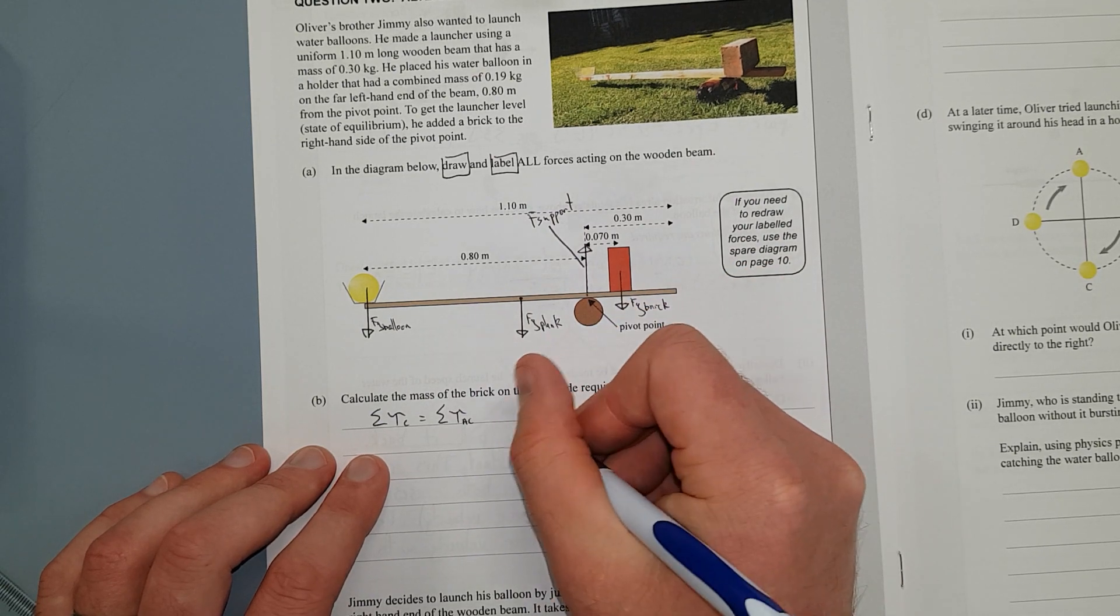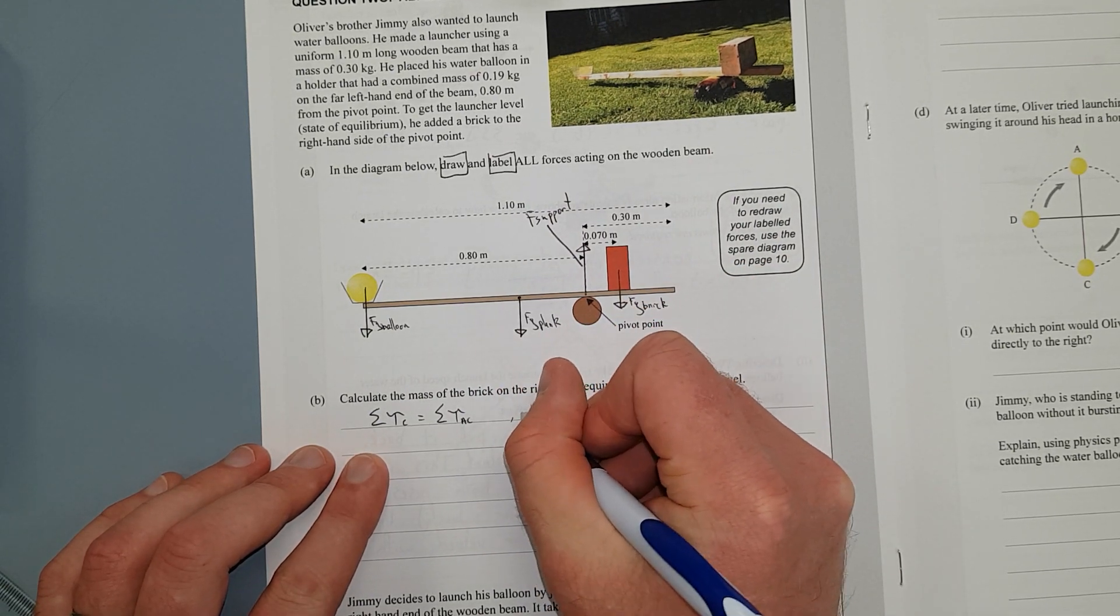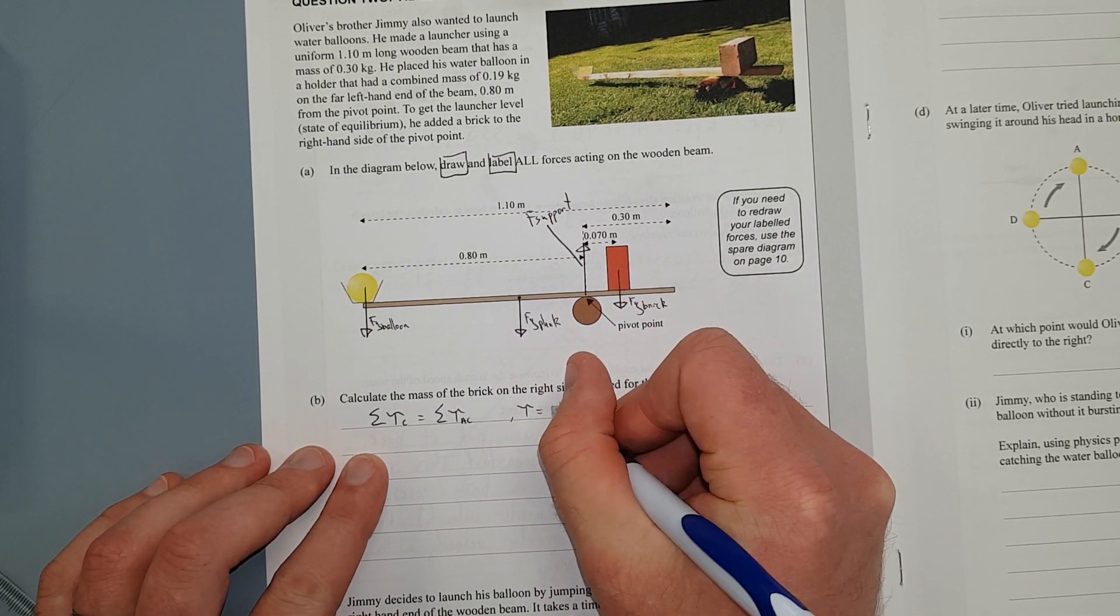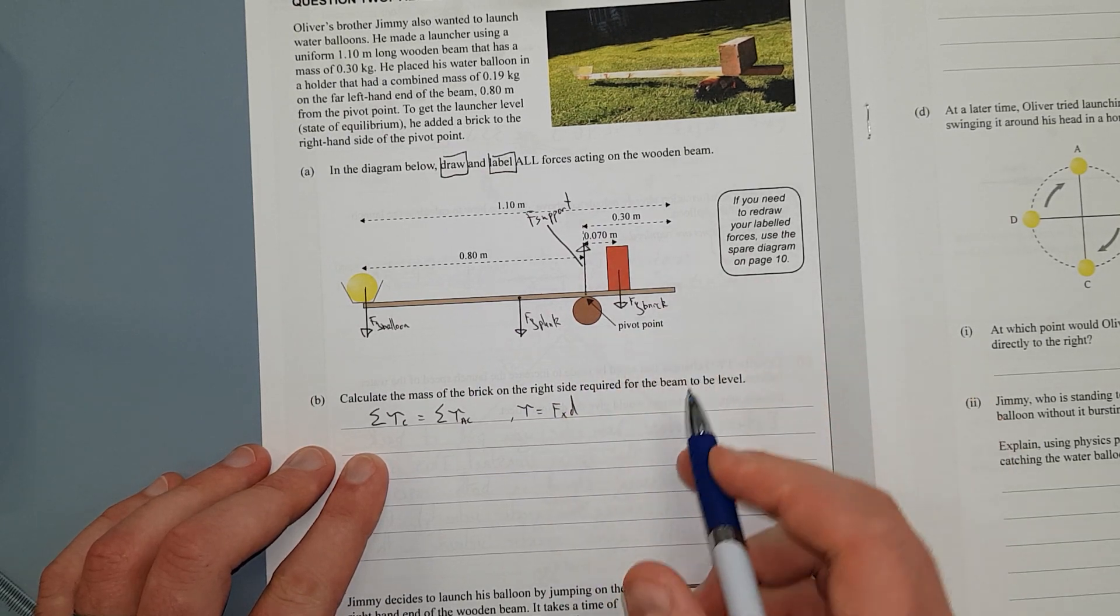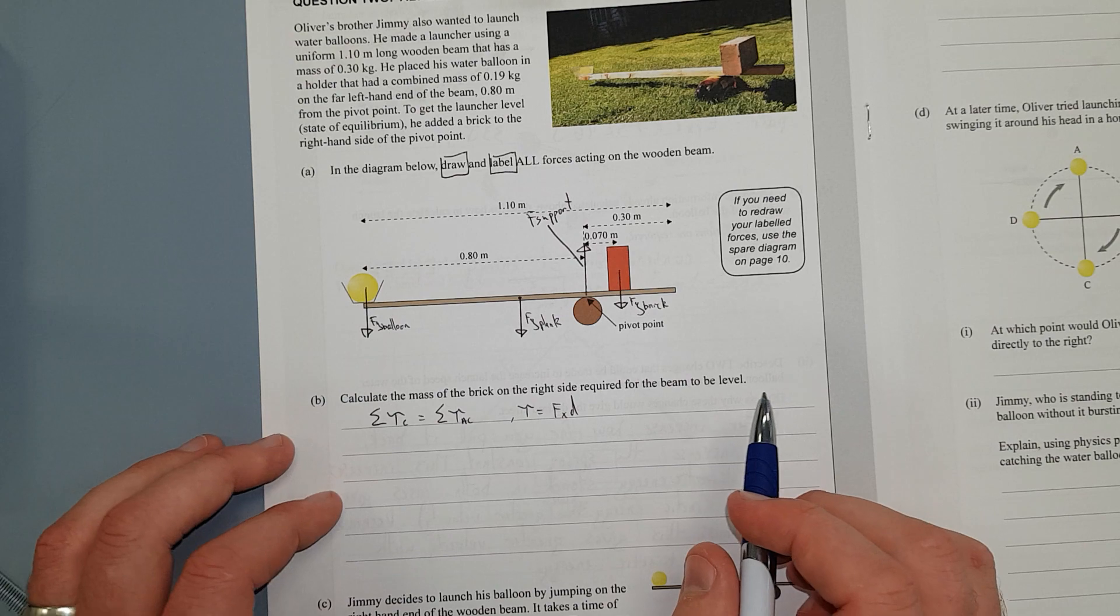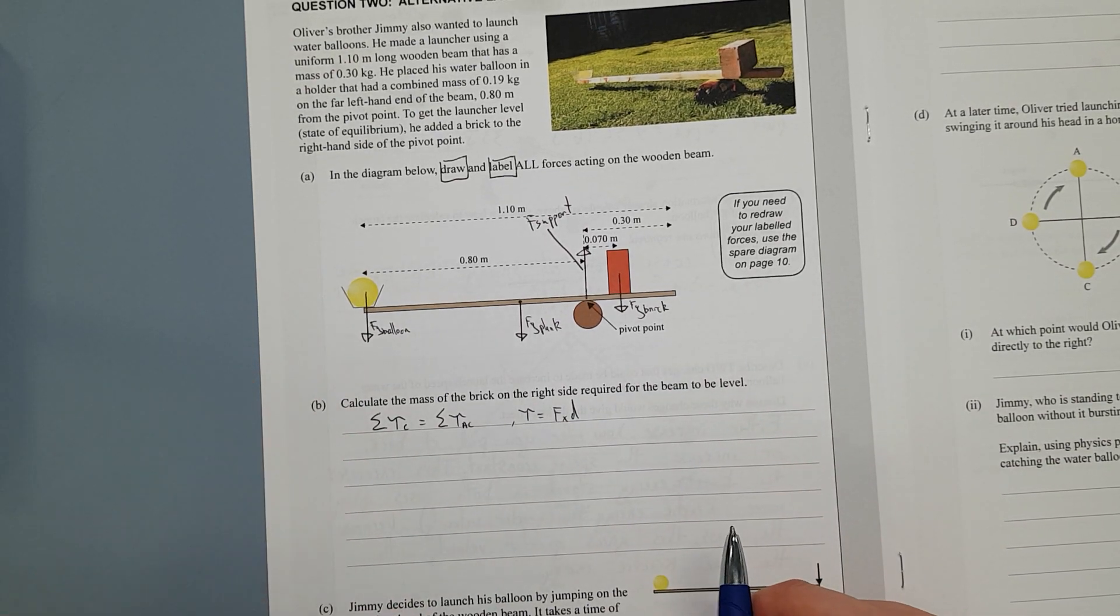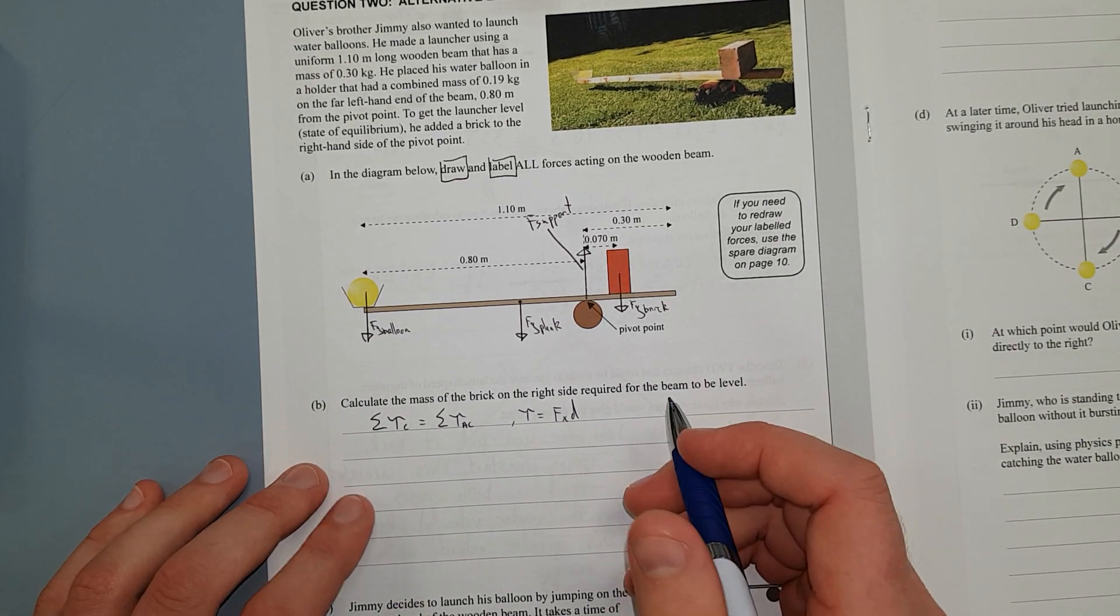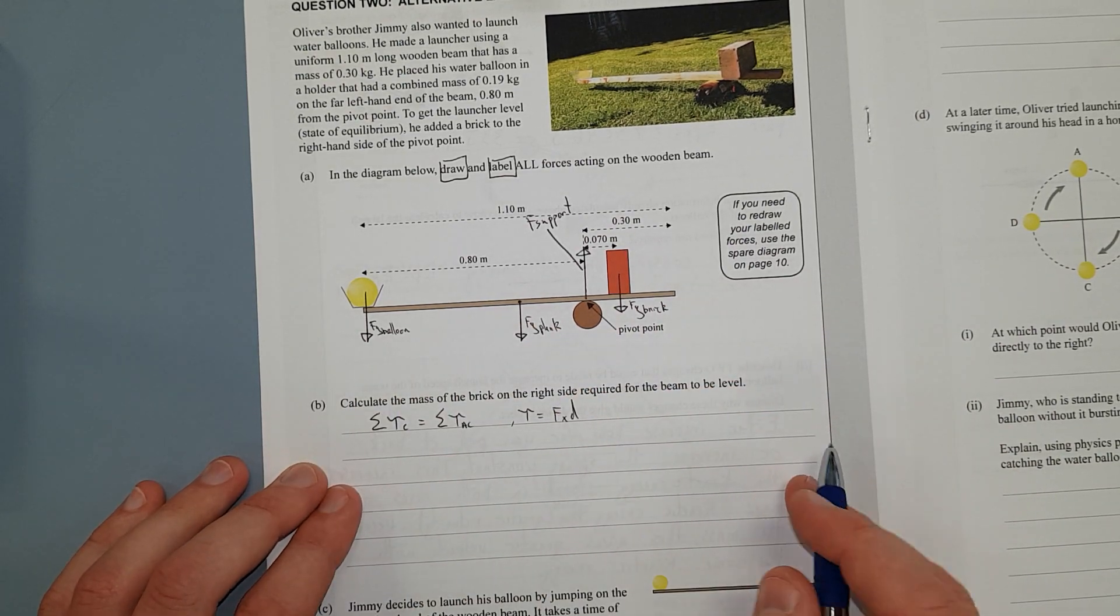Clockwise should equal the sum of the counterclockwise or anticlockwise torques. This is what we've just stated. Torque. On your formula sheet, you have torque is equal to force times distance. So, I'll just chuck that. We'll really chuck that. We'll chuck that at the side here. Equals force times distance.